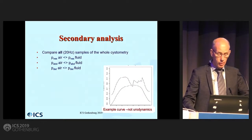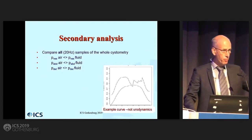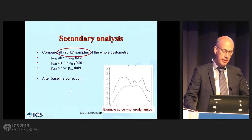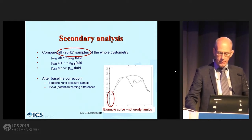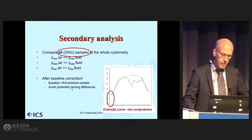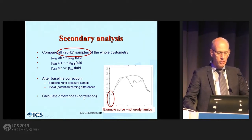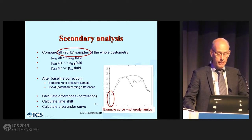After good zeroing, I decided to compare all the samples of the whole cystometry — more than 10,000 samples per pressure trace. I was going to compare vesical versus vesical, air versus fluid, et cetera. And then I had those baseline differences. I said, if I correct those baseline differences, what's going to happen? What differences are left? So I equalized those — this is effects after zeroing: calculate differences, correlation, and calculate time shift. And area under the curve. That's what I did.